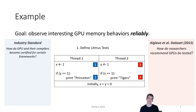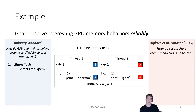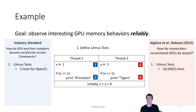We can already see a divergence here between the industry approach and the academic approach. The Vulkan test suite includes two litmus tests for memory model conformance, whereas the Alglave dataset looked at over 10,000 tests. Obviously, this is a much more comprehensive but time-consuming approach.